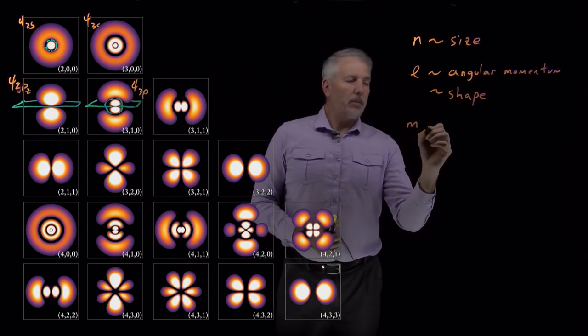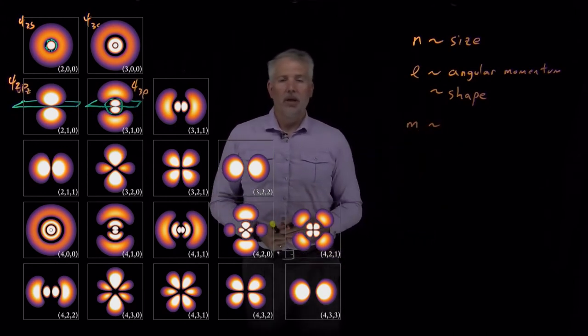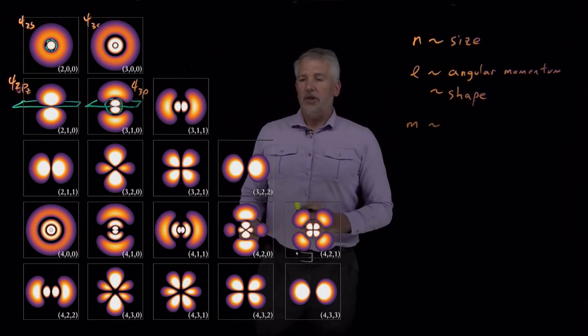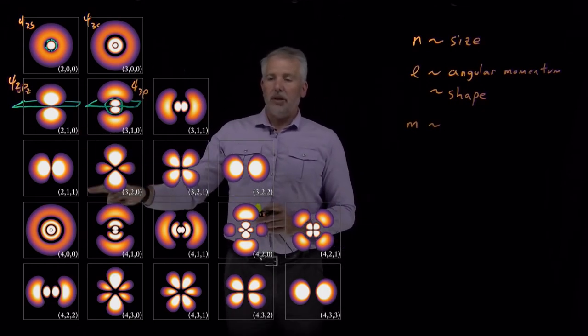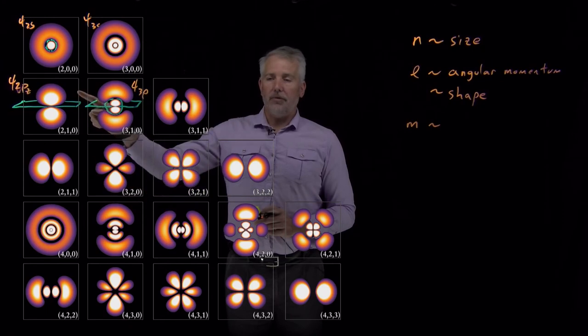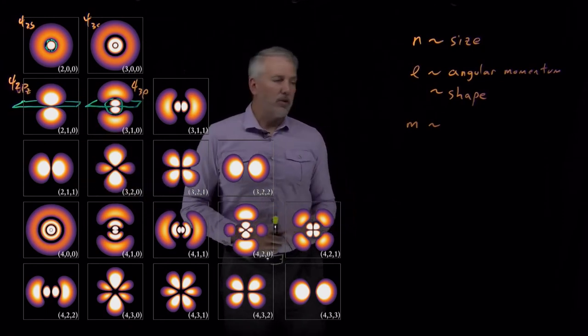The m quantum number, the magnetic quantum number on the other hand, is telling us, for example, the 2pz orbital and the 2-1-1 orbital. Those differ primarily in the orientation of those two orbitals.